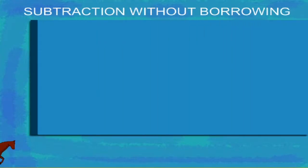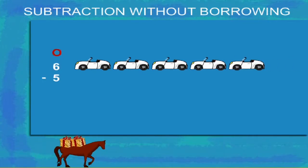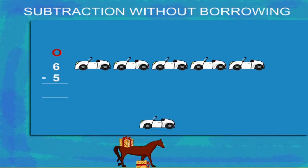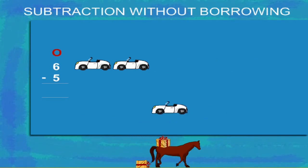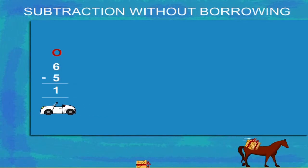Subtraction without borrowing. Here are the ones. 6 ones minus 5 ones. There were 6 cars. 5 zoom away, one by one. So, 1 left. 6 minus 5 is 1.